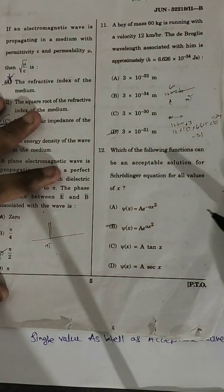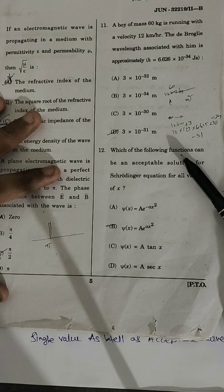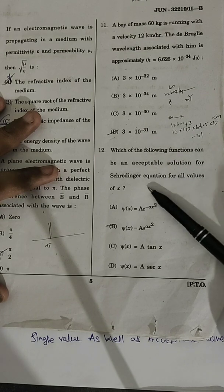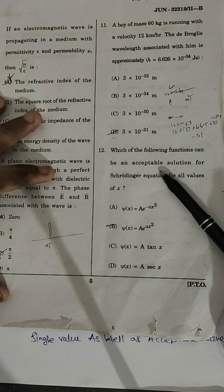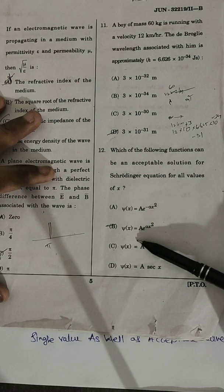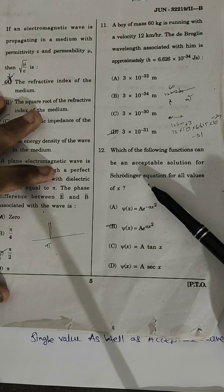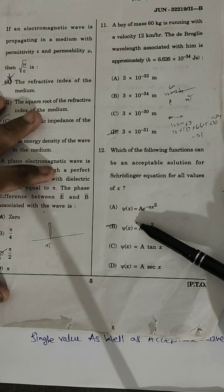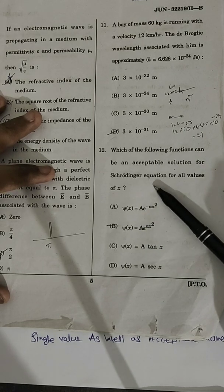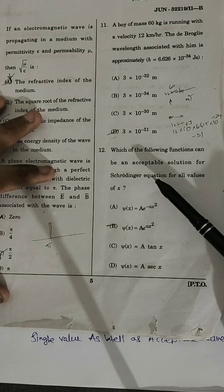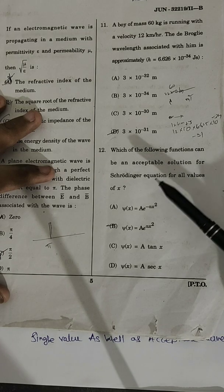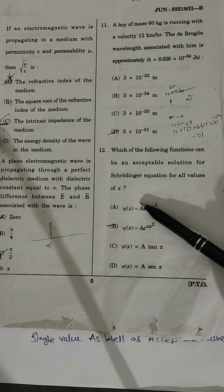This is question number 12: which of the following functions can be an acceptable solution for the Schrödinger equation for all values? When we analyze this question, we ask: what are the acceptable wave functions? So first we will discuss the properties of an acceptable wave function.